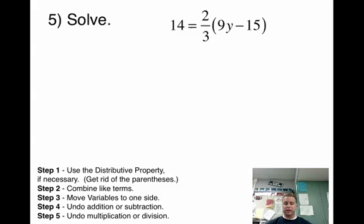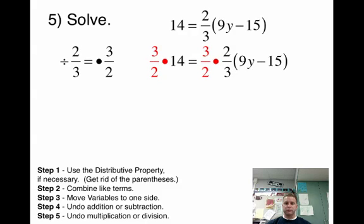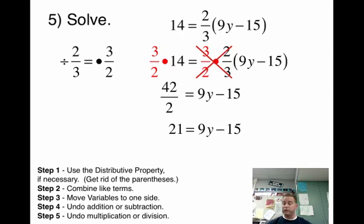You've got a couple problems like this. And these can be a little bit tricky. So I wanted to help you with these. You've got two problems in your homework like this. So we have 2/3. There are parentheses. So we need to kind of get rid of those parentheses. The easiest way to do that is to get rid of that 2/3. So just like we've done before, we're going to multiply both sides by 3 over 2. That'll give me 42 over 2. 3 times 14 is 42. 2 times 1 is 2. Our 3 over 2 and our 2 over 3 cancel out. And we're left with 9y minus 15. I'm going to say, I don't like that 42 over 2. So I'm going to simplify that to 21. 42 divided by 2 is 21.